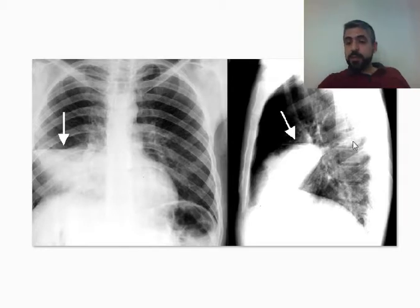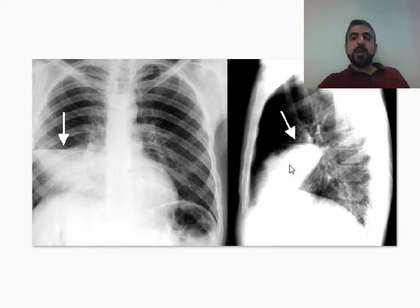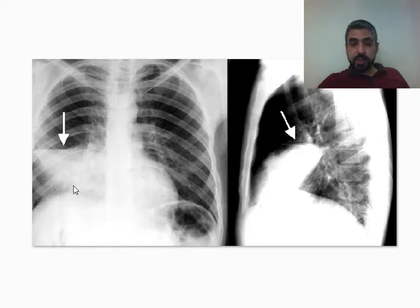On the lateral view, you can easily appreciate the middle lobe between the transverse fissure superiorly and the oblique fissure inferiorly. This is the lower lung lobe and this is the upper lung lobe. The right middle lobe is dense, indicating it is consolidated. No signs of volume loss are seen — it is still in its place — indicating consolidation, not collapse.